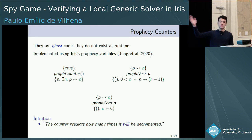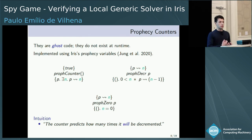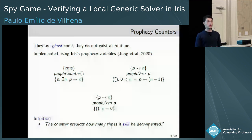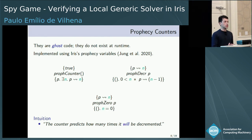The prophecy decrement operation is a call to the prophecy counter. After this call, we learn that the number of times it will be called is at least one — greater than zero — and the number of times it will be called gets decremented by one, because we just made a call. The deallocation of a prophecy counter also makes sense: when we deallocate, we learn that the number of times it will be called is zero.